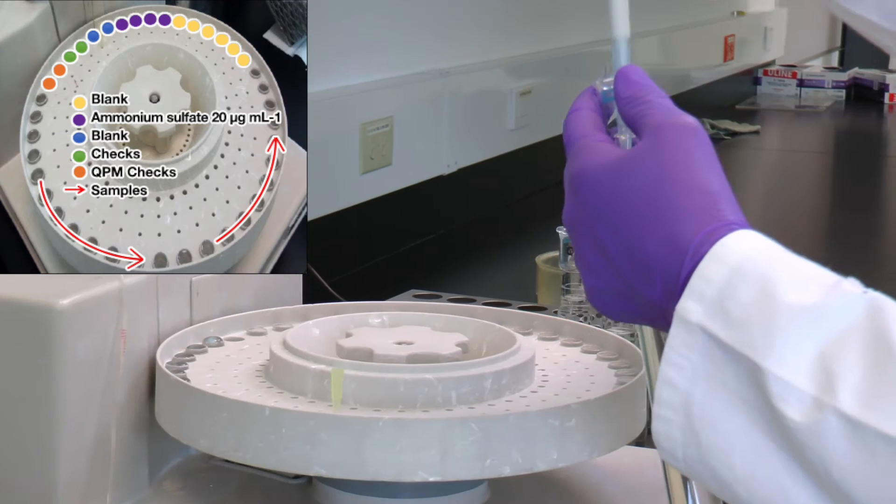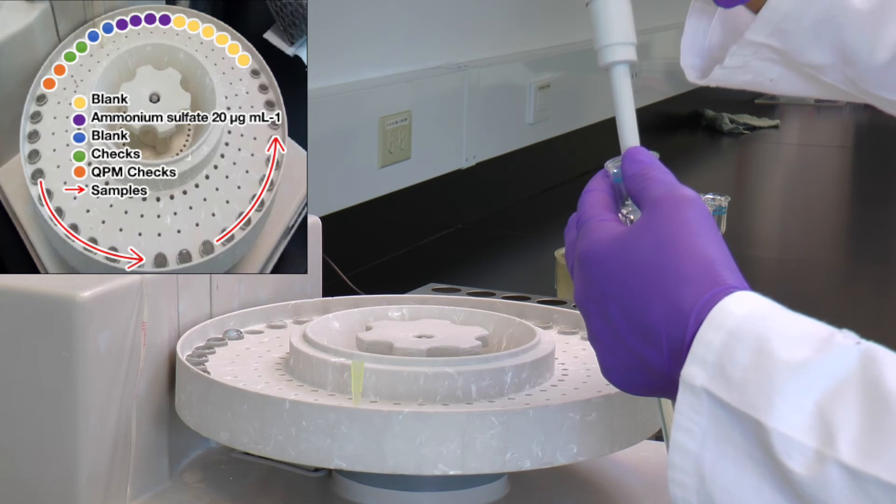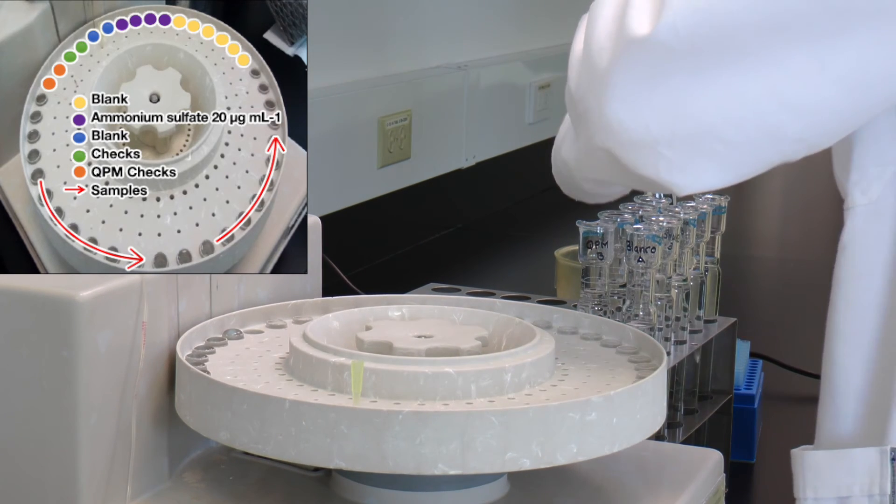2 capsules with the digestion blank to adjust the baseline. 2 capsules with 2 checks as controls. Finally, place the capsules of each sample on the sampler.